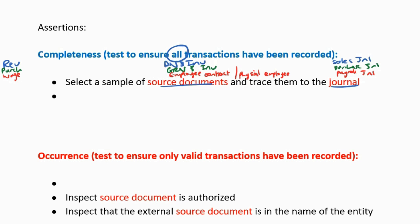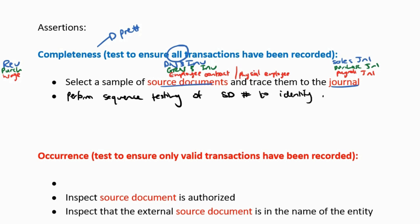We then have another test, which is very much linked to one of our controls for completeness. The best control for completeness is to have pre-numbered documents. So a substantive procedure we can physically do is to perform sequence testing of the specific source document numbers to identify missing document numbers and therefore missing transactions. Similarly, where you have employee numbers, you can perform a sequence check to identify any numbers not in sequence and therefore identify somebody who's potentially been left off.